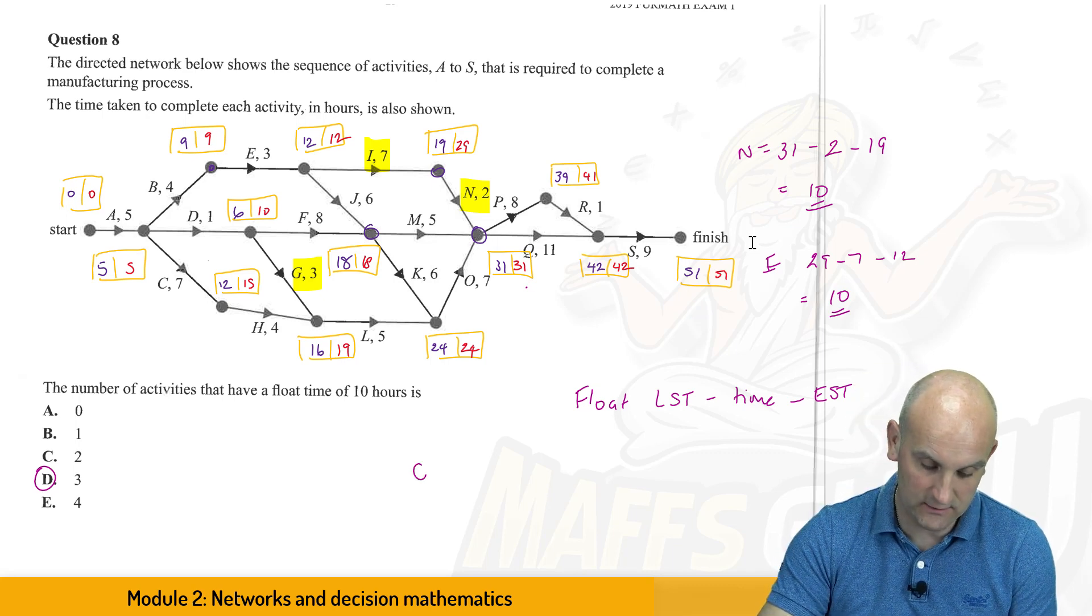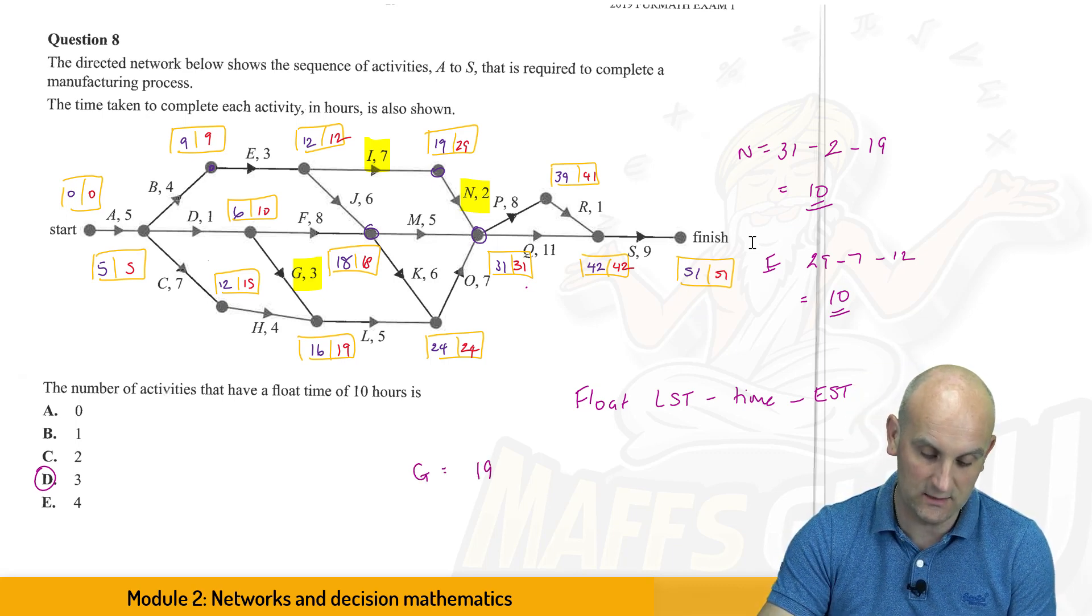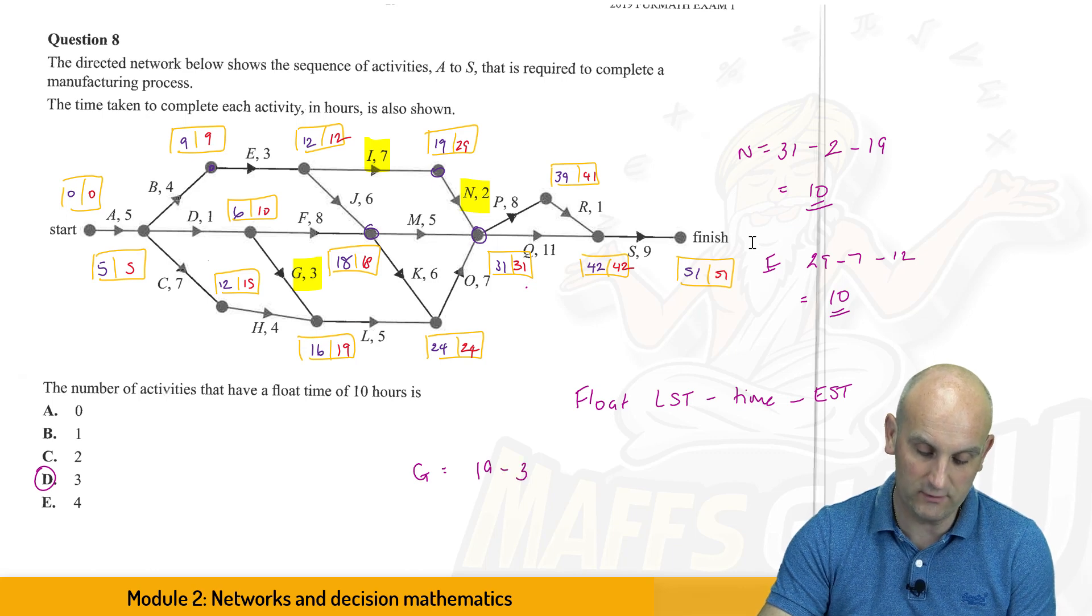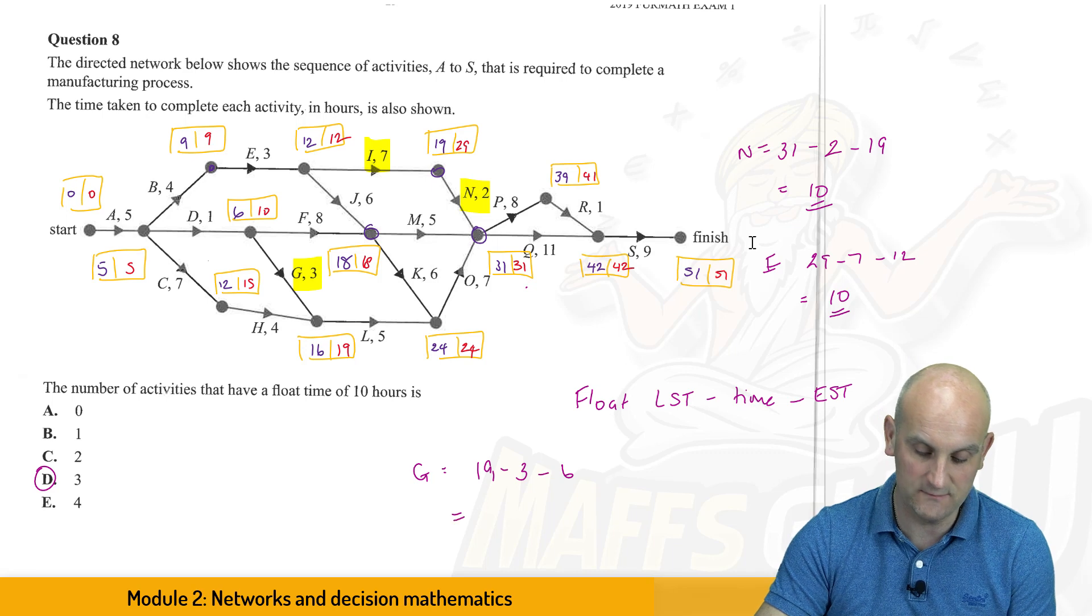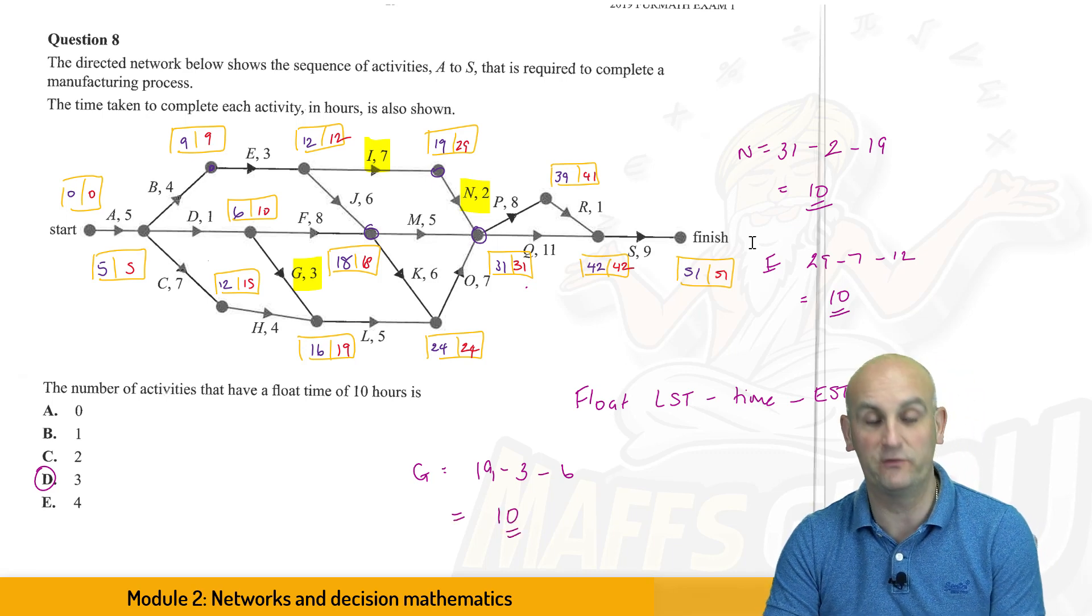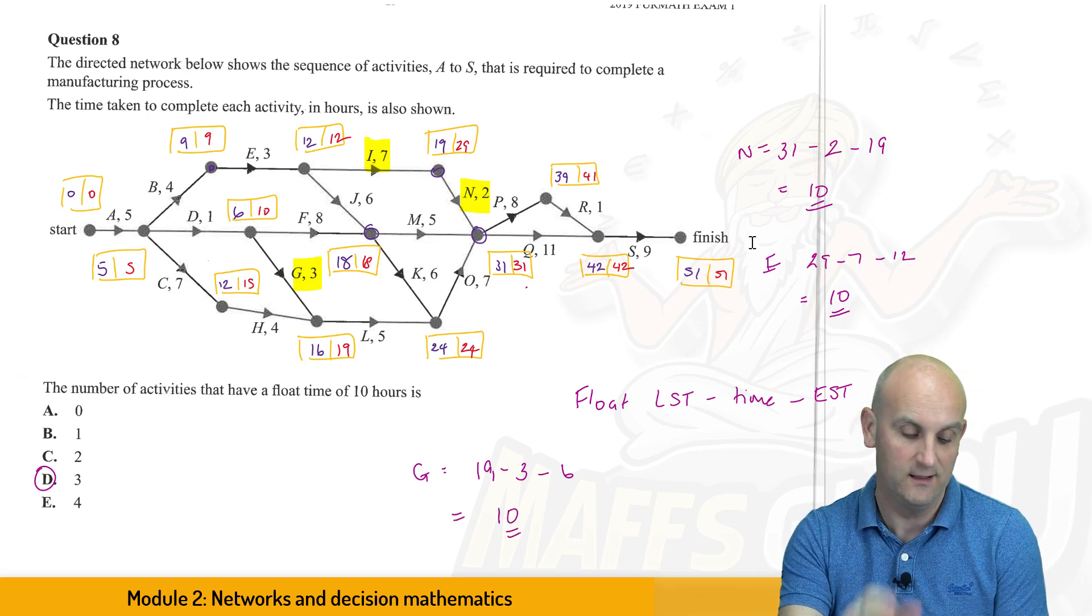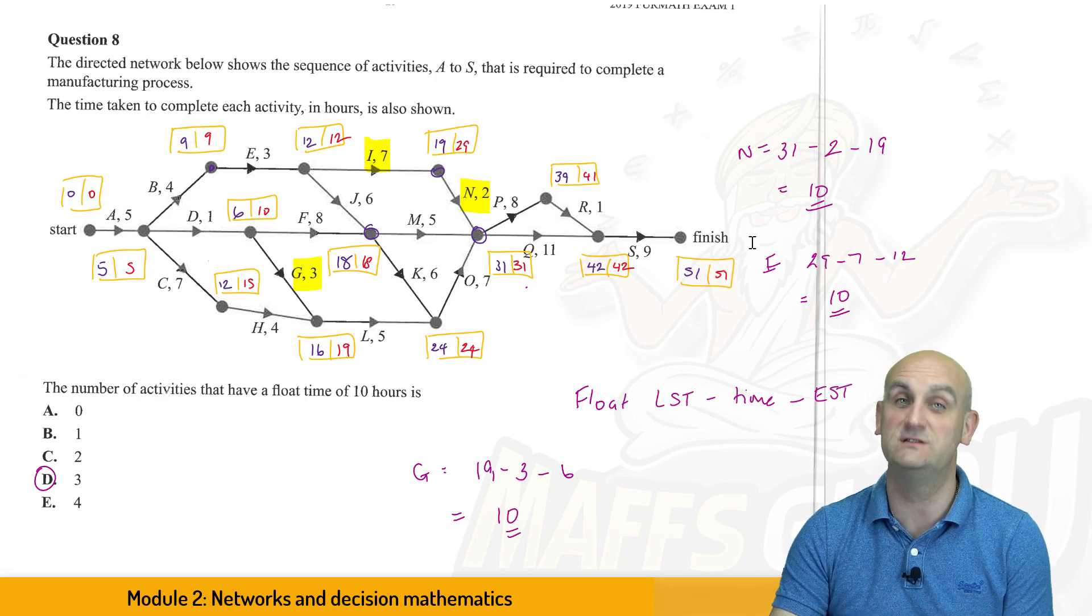And we'll just check G. Let's do it down here. So for G, we've got the latest start time was 19. Subtract the 3 for how long it's actually going to take, and subtract the 6 for the earliest start times, and once again, we get 10. So there are three activities that have a float time of 10 hours.